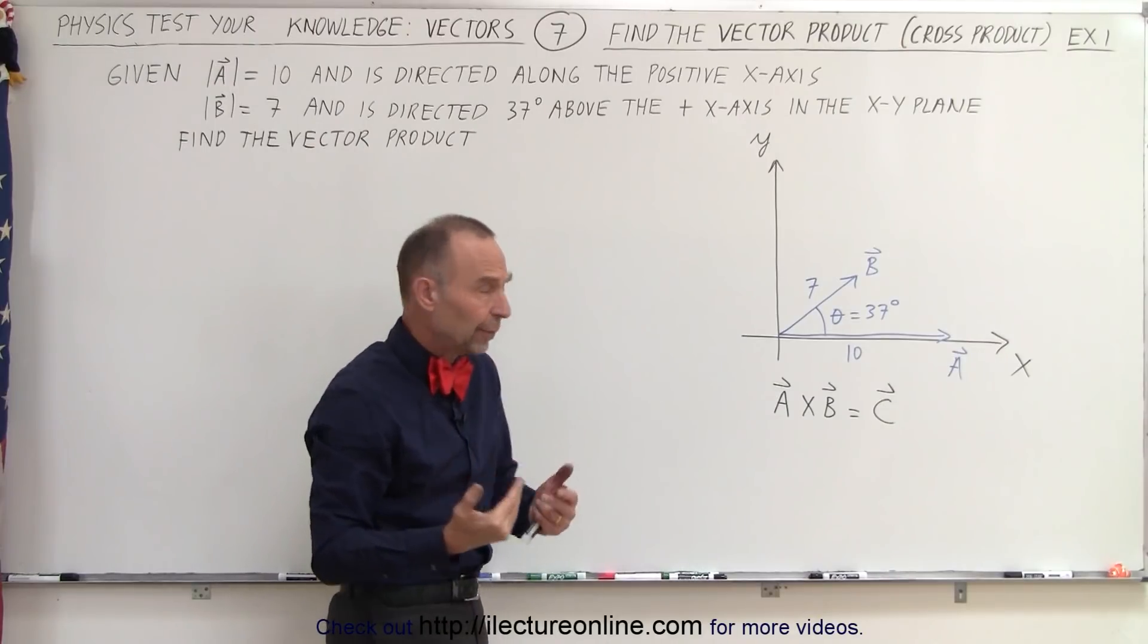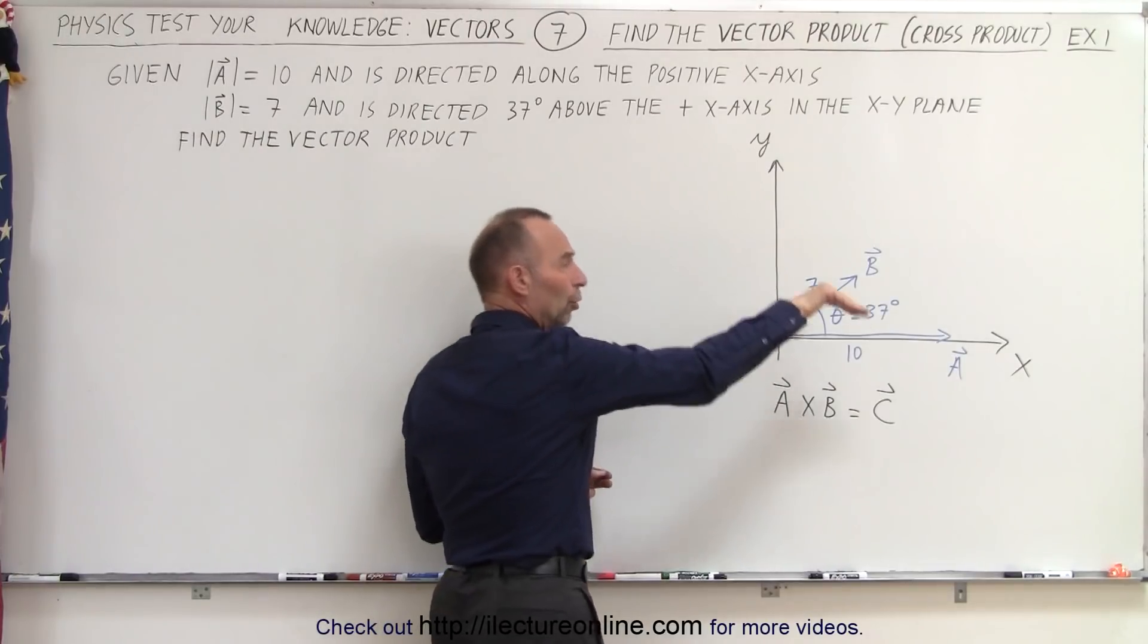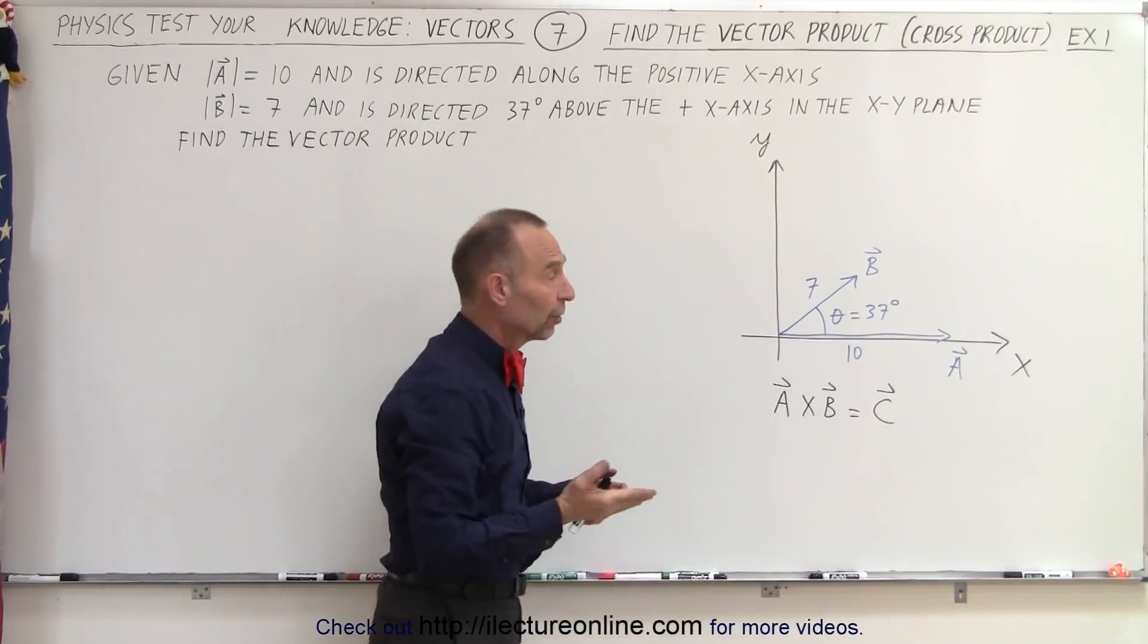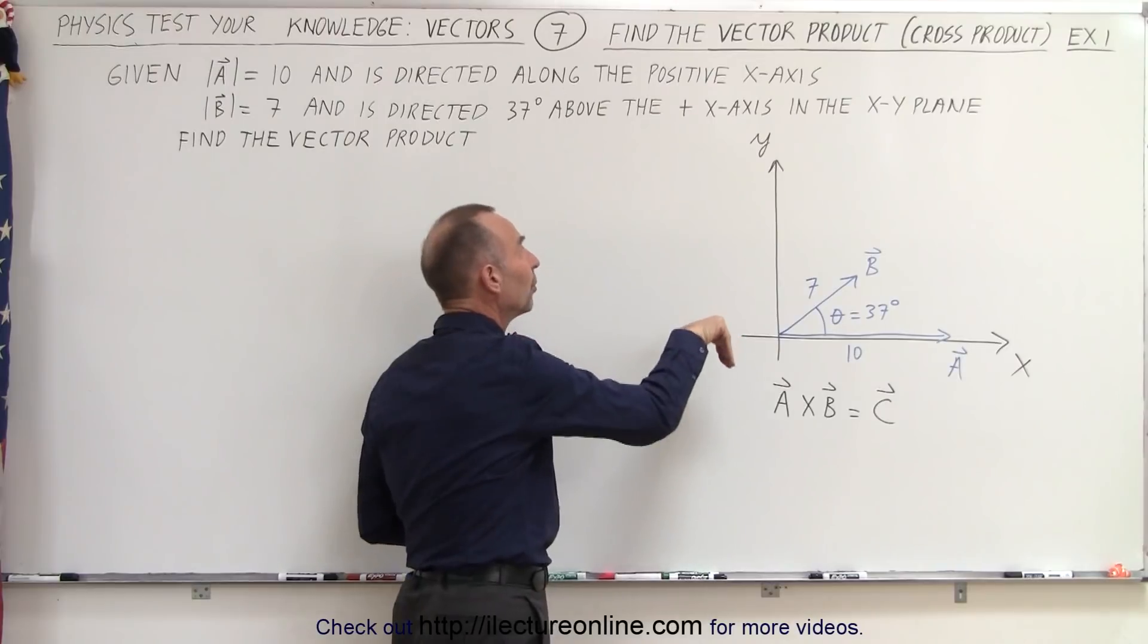If we were to do it the other way around, B cross A, then our fingers would point in the direction of B, curl them in the direction of A, and the result would be pointing into the board. So the direction of A cross B is out of the board, and B cross A is into the board.